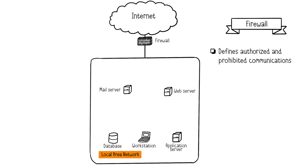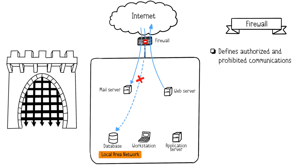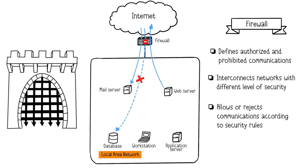The cornerstone of this perimeter defense is the firewall. A firewall secures a network by defining authorized or prohibited communications, both incoming and outgoing. Picture the firewall as the portcullis separating the castle from the treacherous lands beyond. The firewall interconnects two or more networks of different security levels.